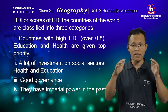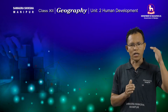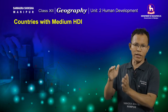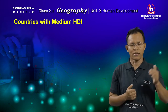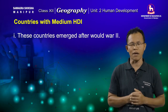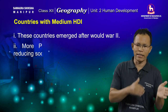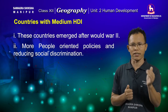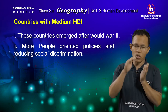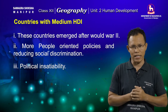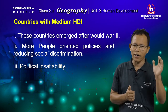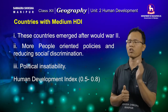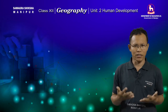The second group of countries is the medium human development index group. These countries have developed or emerged after World War II. They have more people-oriented policies and are working on reducing social discrimination, though these countries are also having political instability. For these countries, the human development index value ranges between 0.5 and 0.8.